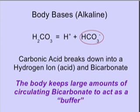The blood is a balance of acids and bases, so there are alkaline components as well. The major alkaline component of the blood is bicarbonate. Bicarbonate is formed when carbonic acid breaks down and the hydrogen ion — the acid — is buffered. The body keeps large amounts of circulating bicarbonate to act as a major buffer.